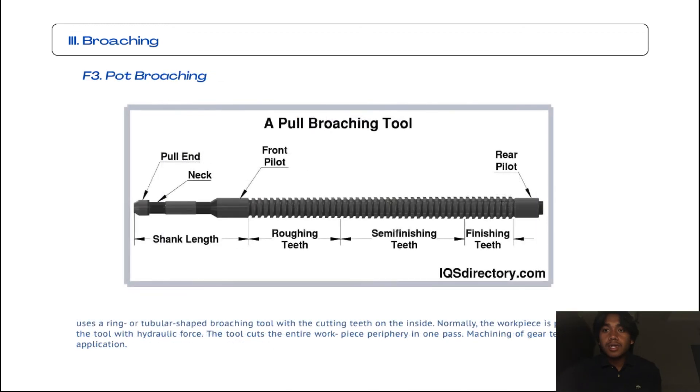Now we're going to the last subtopic from broaching, which is pot broaching. It uses a ring or tube-shaped broaching tool with cutting teeth on the inside. Normally, the workpiece is pushed through the tool with hydraulic force, and the tool cuts the entire workpiece periphery in one pass. Machining of gear teeth is a typical application.